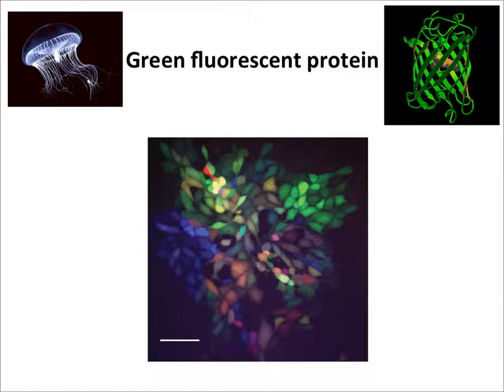Green fluorescent protein, originally a gene from the jellyfish Aequorea victoria, is a wonderful reagent. You don't have to fix tissues or add substrate — you just shine UV light on infected cells and see GFP in real time. You can fuse GFP to many viral proteins without ruining their activity, infect cells, and track the production and localization of those proteins during infection.